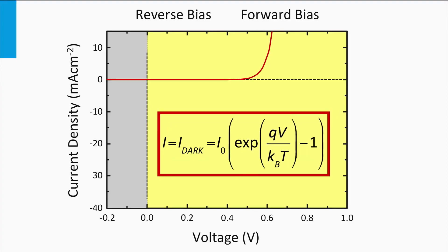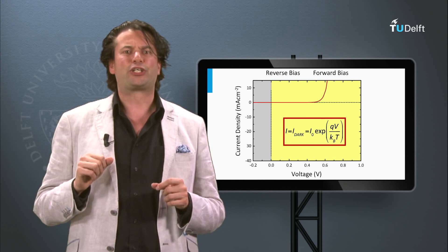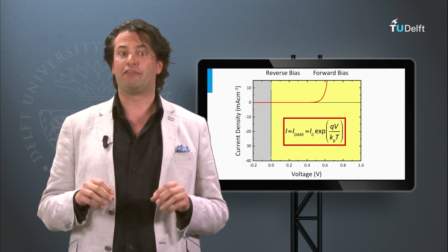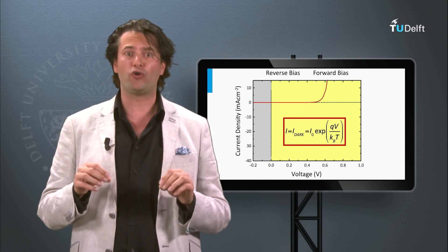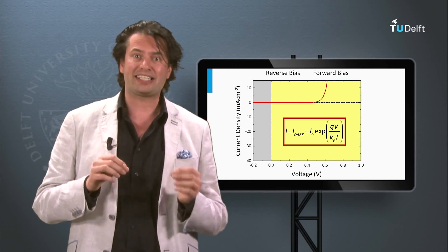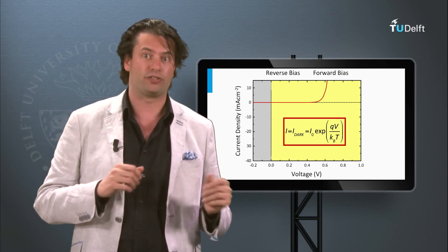If we apply a large positive voltage, we get a large positive current and the exponential term dominates over the minus one term in the equation. Note that the current on the vertical axis is positive if it flows in the forward direction of the diode, whereas it is negative if it flows in the block direction of the diode.